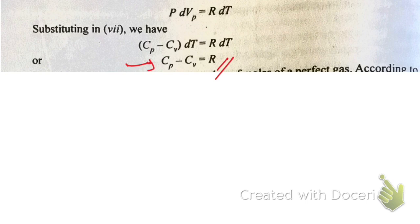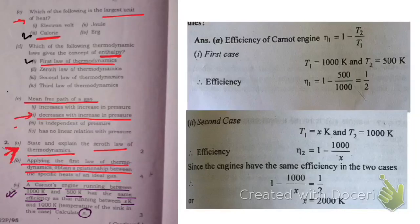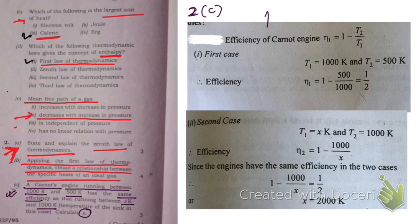There is a numerical problem in question 2c: a Carnot engine running between two temperatures of 1500 Kelvin has the same efficiency as another engine running between X Kelvin and 1000 Kelvin. We need to find X. Here is the solution to question number 2c.